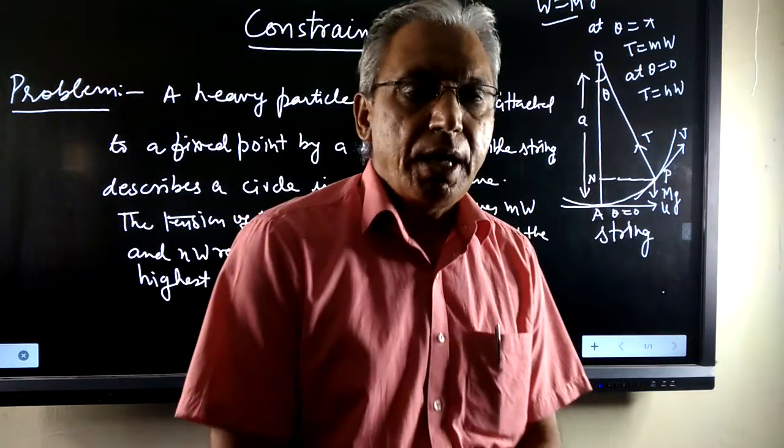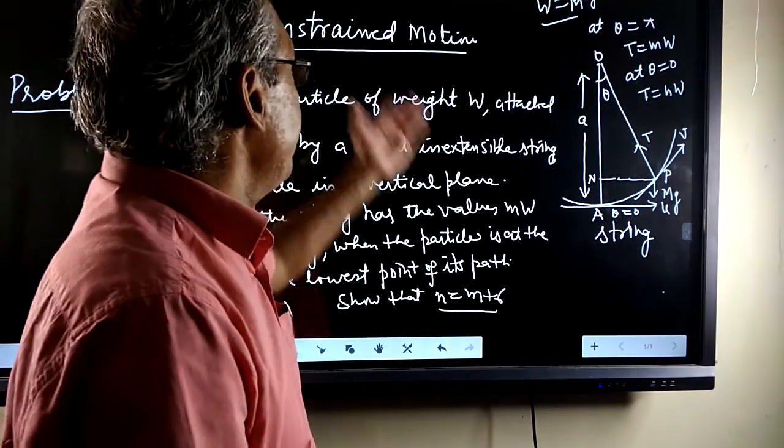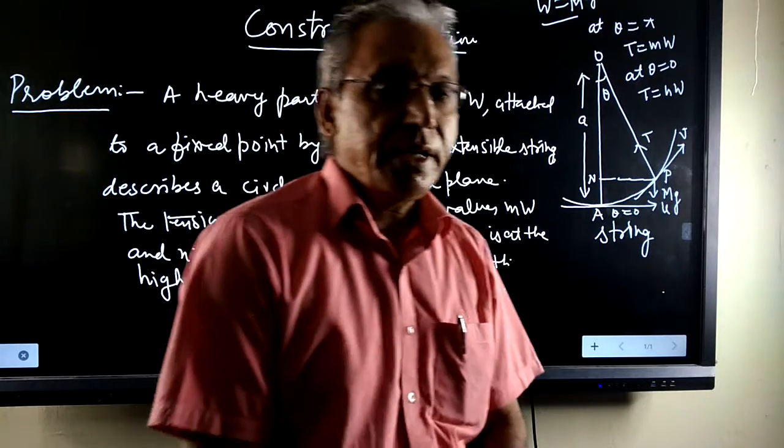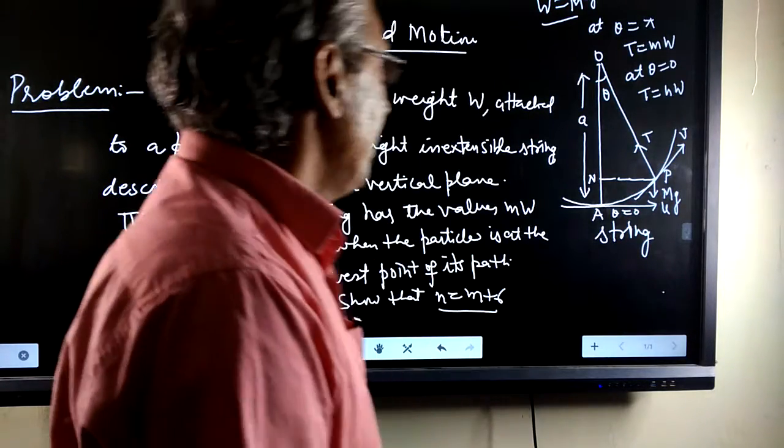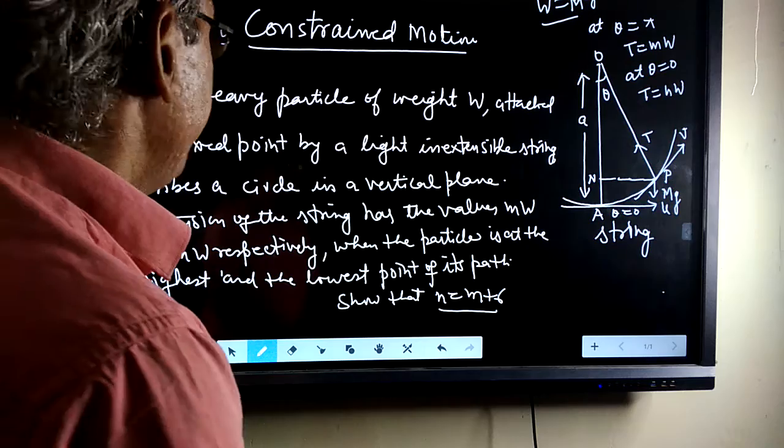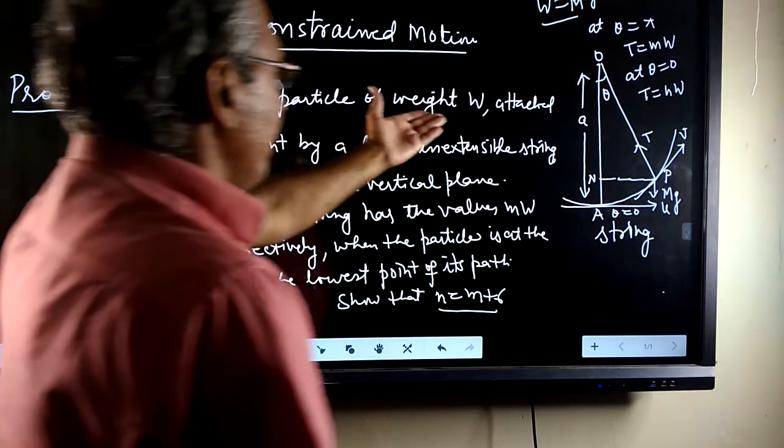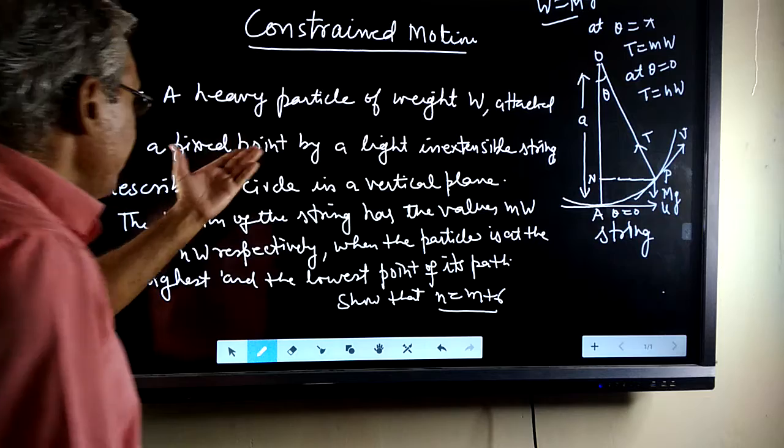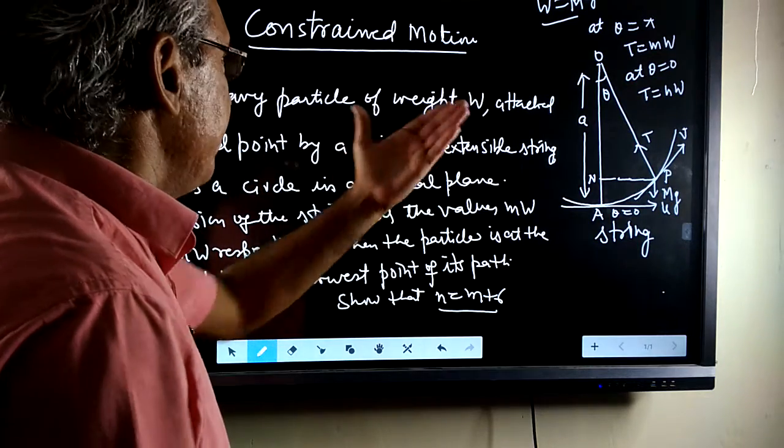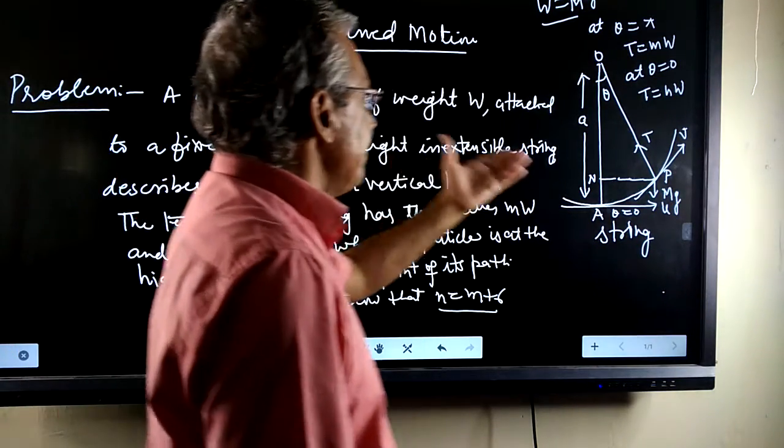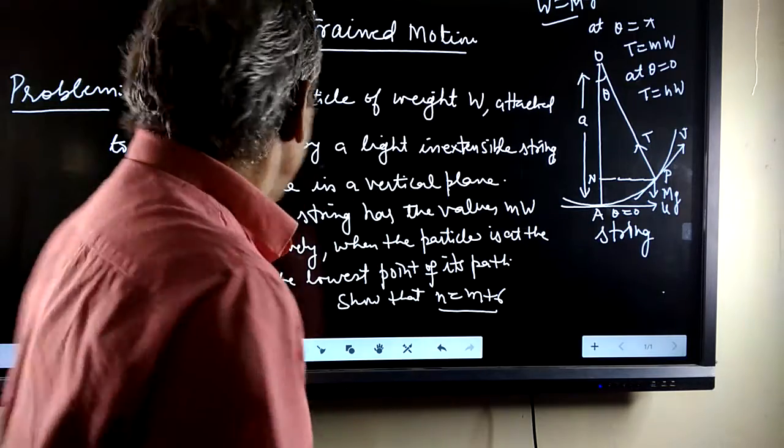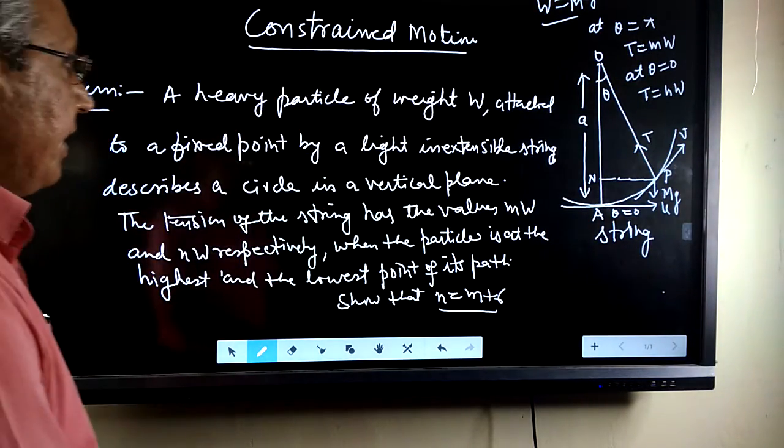Dear students, today we will have constant motion related to this problem. The problem statement is that a heavy particle weight w attached to a fixed point by a light inextensible string, an inextensible light string.